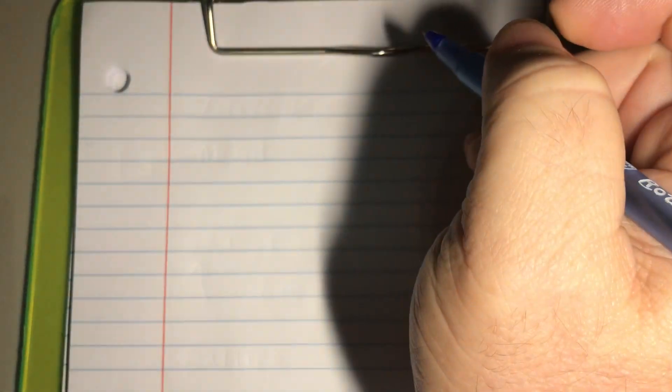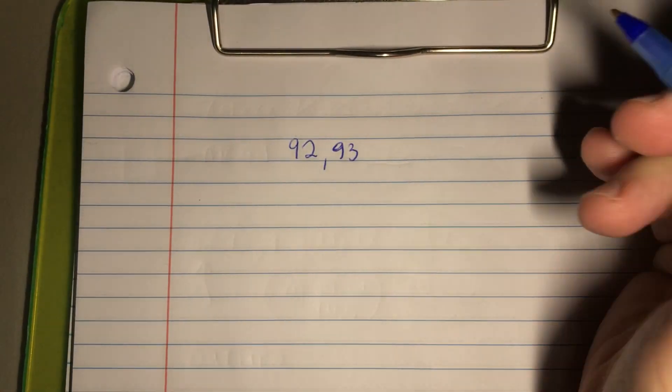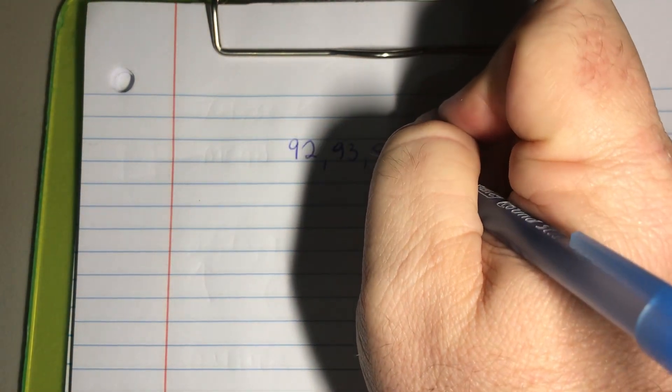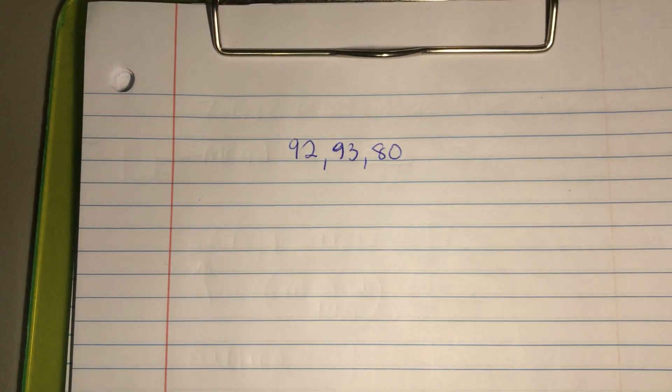So let's assume that every quarter Mr. Neely has four quizzes or tests. What if on the first test somebody got a 92, and then they did even better on the second test and got a 93. But then on the third test they didn't quite grasp the material like they wanted to—they got an 80.